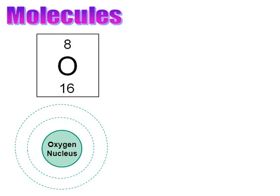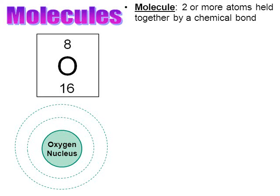What do atoms do when they are not stable? They form molecules. Molecules are two or more atoms held together by a chemical bond. Molecules are going to form when atoms are not stable — meaning they don't have a full, complete set of electrons.